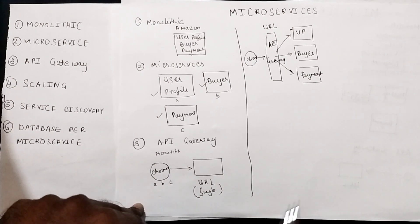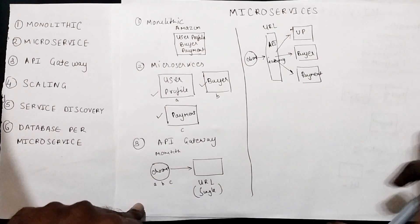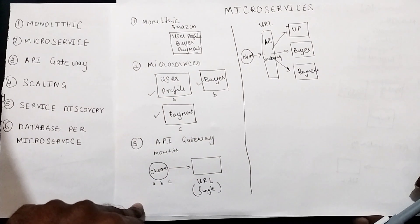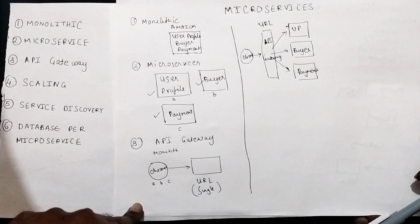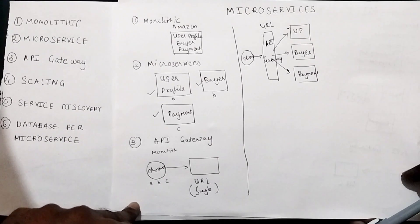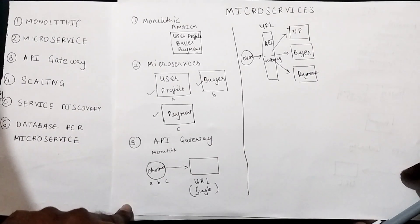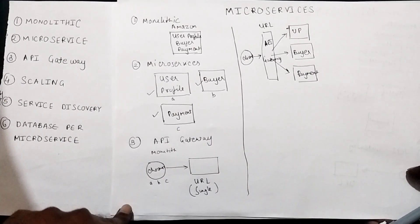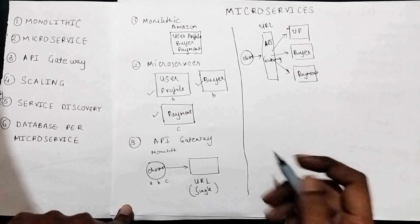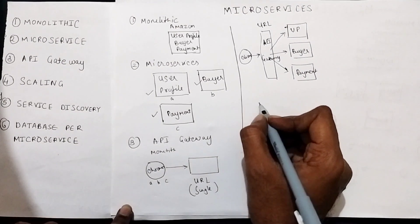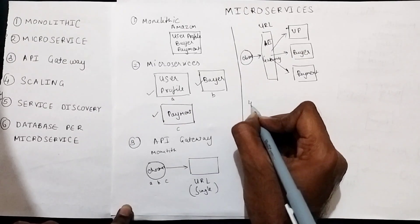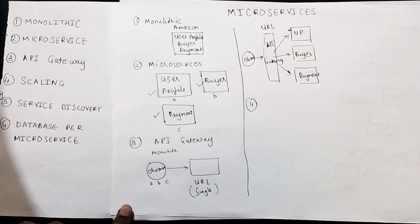There are some additional features which the API gateway can provide, which we are going to look at in the upcoming tutorial. Now let's move on to our fourth concept, which is scaling.